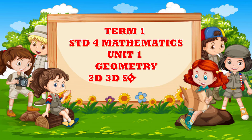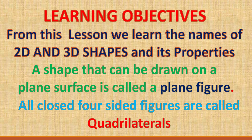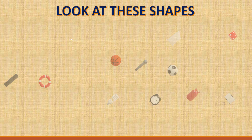Term 1 standard for mathematics, unit 1: geometry, 2D and 3D shapes. Learning objectives: from this lesson we learn the names of 2D and 3D shapes and their properties. A shape that can be drawn on a plane surface is called a plane figure. All closed four-sided figures are called quadrilaterals.